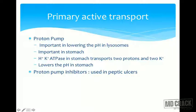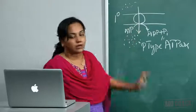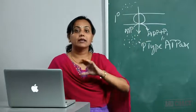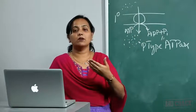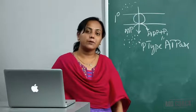The potassium-proton ATPase in the stomach transports two protons and two potassiums and lowers the pH within the stomach. Clinically, in peptic ulcers we use proton pump inhibitors, which inhibit this pump and help decrease the lowering of pH that occurs during peptic ulcer disease.